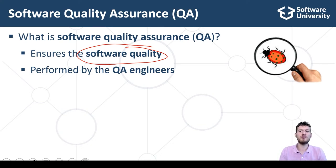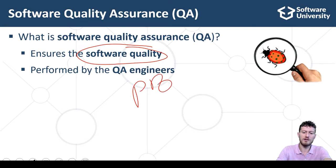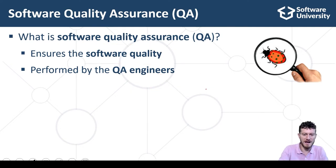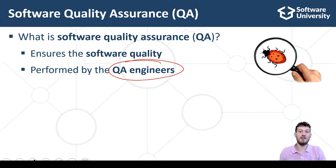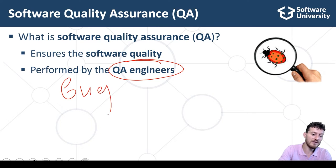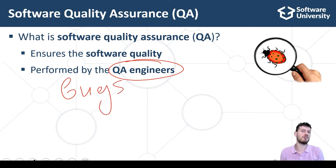Software Quality Assurance goes beyond the quality of the software itself — it also includes the quality of the development process used to develop, test and release the software. The QA is performed by QA engineers, who test the software's functionality, usability, security and other aspects, report and track bugs, and track the development process and its quality.